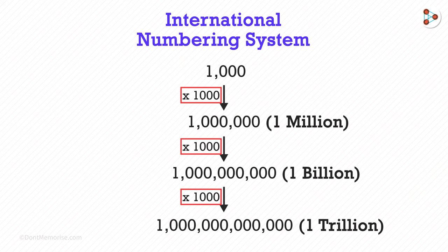If we notice carefully, we will observe that in the international numbering system, we multiply by 1,000 every time to get the next set.